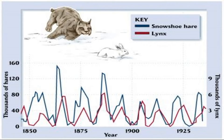Once the population of the lynx decreased, the remaining members of the snowshoe hare population were being hunted and killed less. They had a chance to breathe, increase their birth rate, and the snowshoe hare population began to rise again. The snowshoe hare population continued to rise while the lynx population was low. But in nature, organisms tend to breed when conditions are favorable, so with the increase in the hare population, there was more food for the lynx. The lynx used this opportunity to breed and their population went on the increase again.